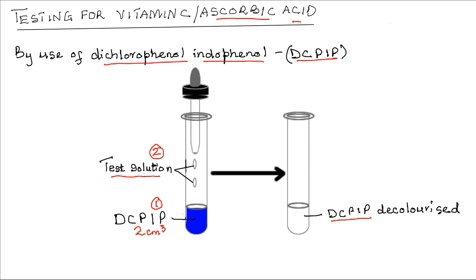That is, the smaller the number of drops used, the higher the concentration of vitamin C in the solution. And also, the more drops that are required to decolorise DCPIP, the lower the concentration of vitamin C.